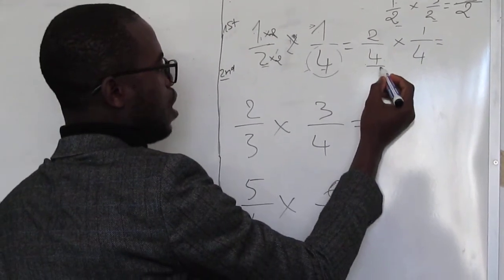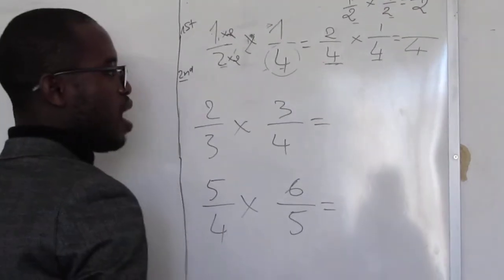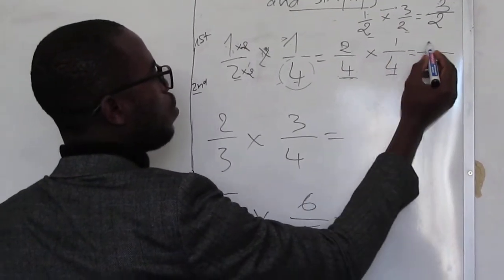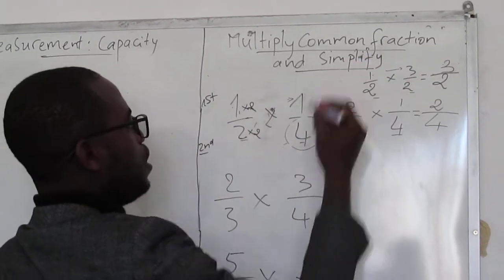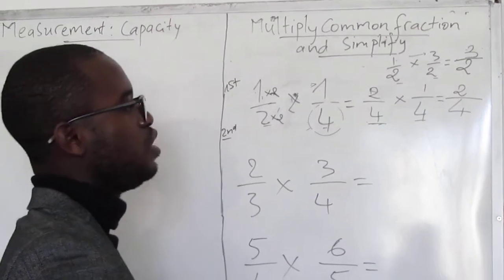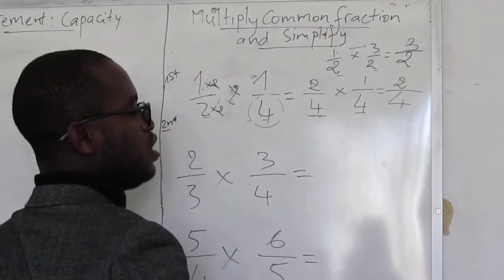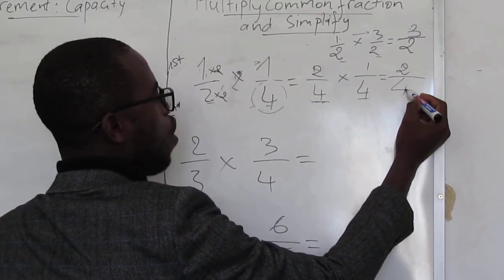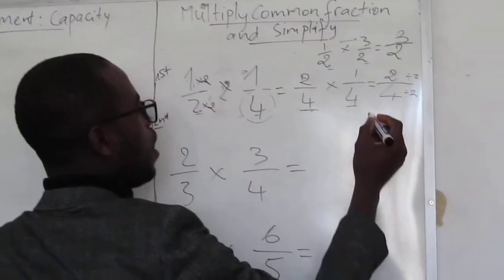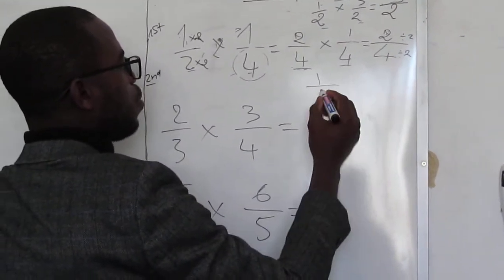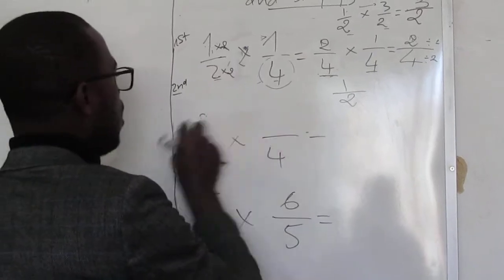Now we have a common denominator: both are 4. We keep our denominator, then we do the numerator: 2 times 1 equals 2, giving us 2 over 4. But they say multiply common fractions and simplify. Simplify means make it smaller by using division. So 2 over 4 — both 2 and 4 are multiples of 2, so we divide both by 2. 2 divided by 2 equals 1, and 4 divided by 2 equals 2. So our answer is 1 half. That is our first method.